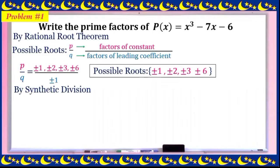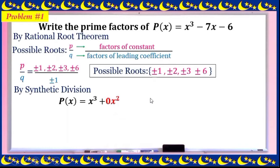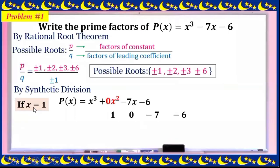By synthetic division, we find the roots of p(x) = x³. This polynomial is in the third degree since the highest power is 3. Written in standard form (descending order), we place 0 for the missing x² term, giving coefficients: 1, 0, -7, and -6.